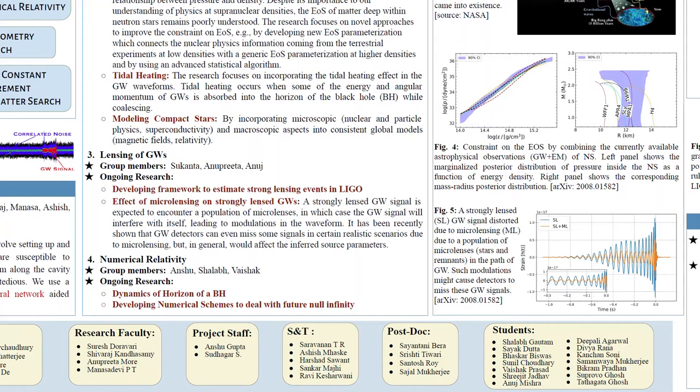These modulations are shown to be very significant in some realistic scenarios due to which we can even miss certain GW signals. But in general you expect microlensing to only affect the inferred source parameters and that means the parameter estimation that you do from a given waveform.